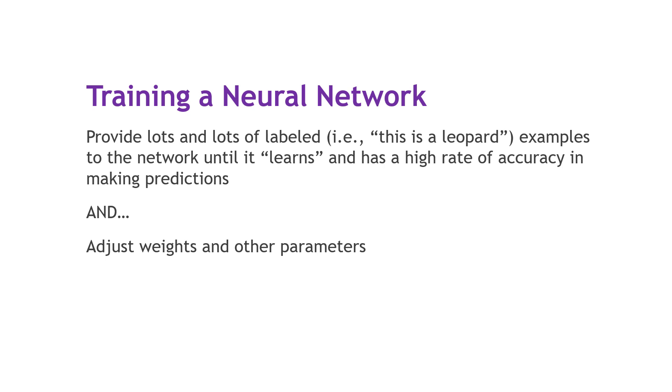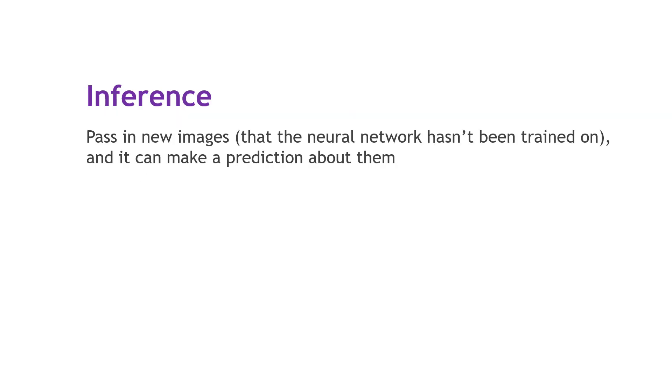But then when we're done with the training part, and we're happy with how well it's making predictions on labeled data, we then save the model, and we can use it to do inference. And inference just means that we're passing in a new image, things that it hasn't been trained on before, and it's able to make a prediction about them. So we pass in a new random picture of a leopard that it hasn't seen, and it can correctly identify it.